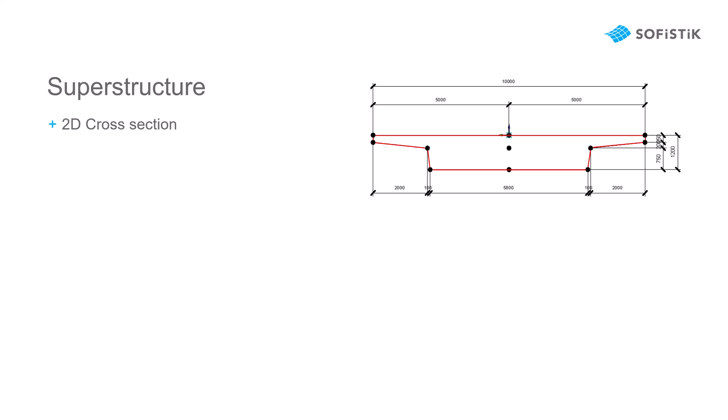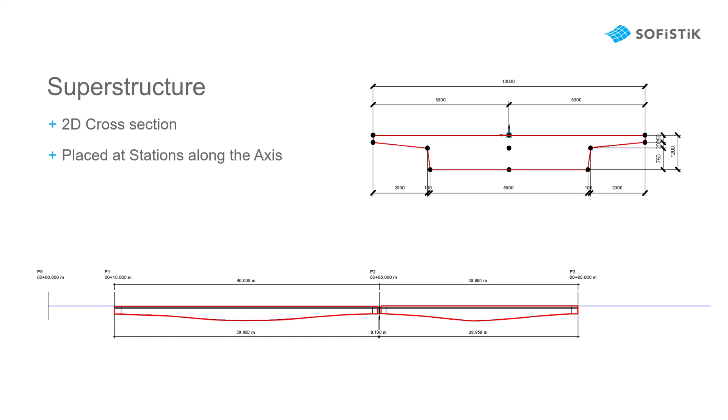The basis for our superstructure is a two-dimensional cross section, which will have the measurements as you see on the picture. We will create two single span girders based on this cross section. Our superstructure will run from placement number one to placement number two, meaning from 10 meter stationing to 50 meters on our axis. There we will have a 10 centimeter gap after which our second single span girder will start and move up to placement number three at 80 meters.